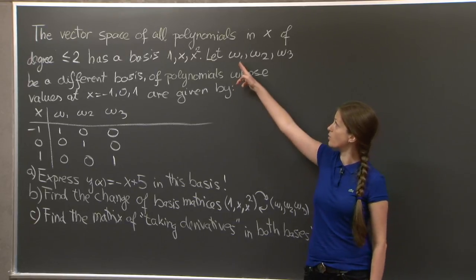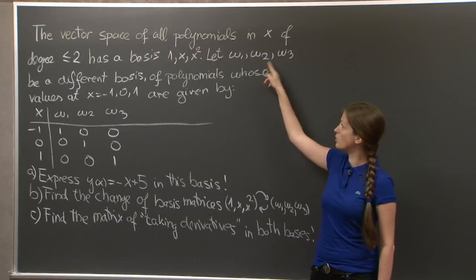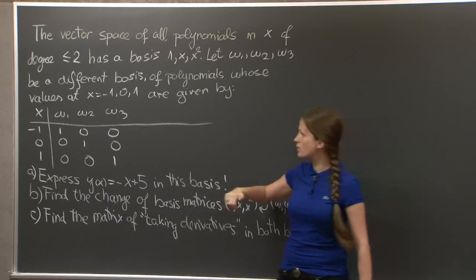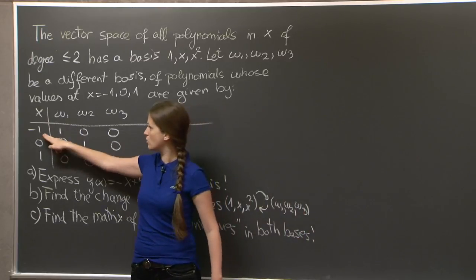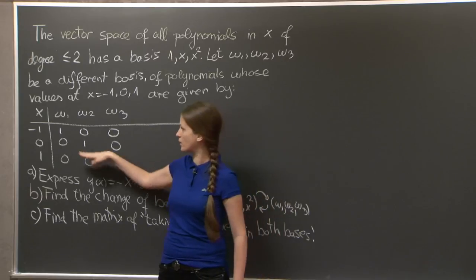But today we're going to consider another basis: w1, w2, and w3. And we don't know what w1, w2, and w3 are explicitly. What we know is that their values at x equals minus 1, 0, and 1 are given by this table here.